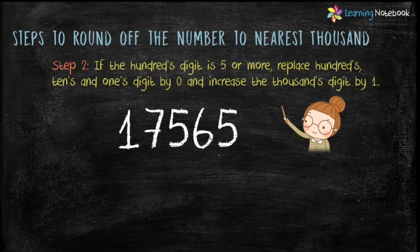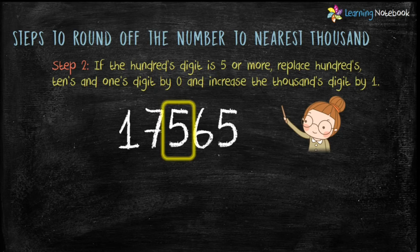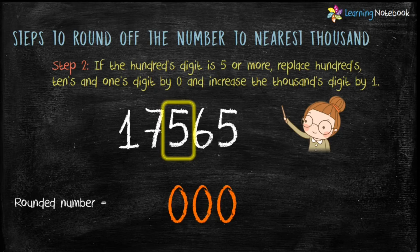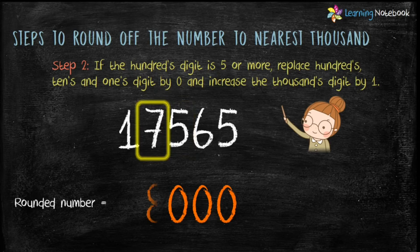Let's see one more example: 17565. Here the hundreds digit is 5. So first replace 5, 6, and 5 by 0, then increase the thousands digit, which is 7, by 1 — 7 plus 1 equals 8. Keep the remaining digits as they are. Therefore the rounded number is 18000.